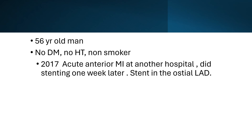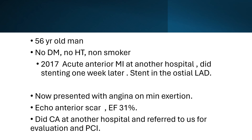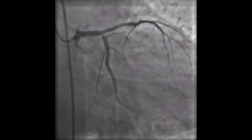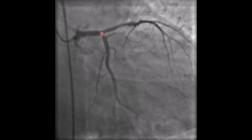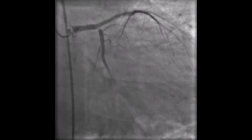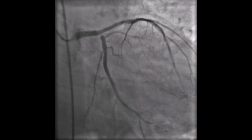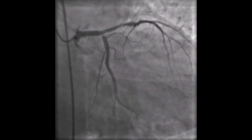The stent was positioned in the ostial LAD. Now presented with angina on minimal exertion. Echo showed anterior scar with an ejection fraction of 31%. He did coronary angiography at the other hospital and was referred to us for evaluation and PCI. The coronary angiography shows subtotal occlusion of the ostium of the circumflex, and there is a stent in the proximal LAD extending into the ostium of the LAD and possibly covering the ostium of the circumflex.